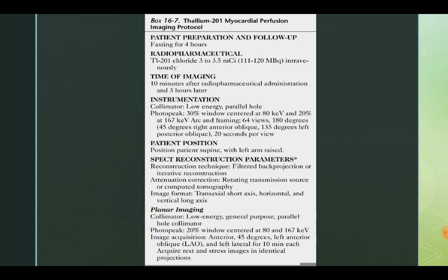We can also use the thallium protocol. The thallium protocol should prepare the patient well with fasting for at least four hours. After that, we can administer radiopharmaceutical dose of 3 to 2.5 millicuries intravenously. After 10 minutes of administration, we can image the patient, and also do delayed imaging three hours later. The collimator used is low-energy parallel hole, not like technetium where we use high-resolution. The patient is the same as in technetium: supine patient with left arm raised.